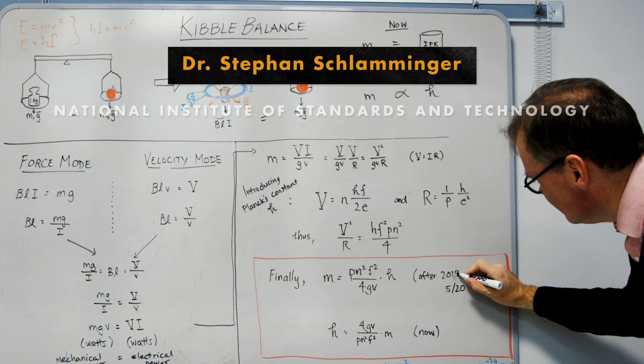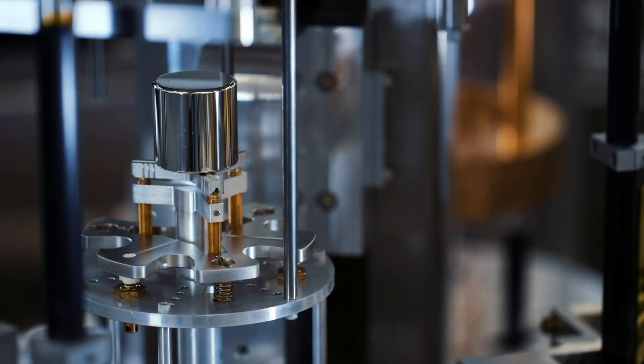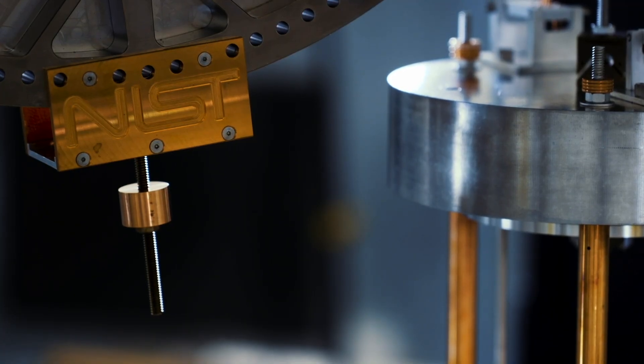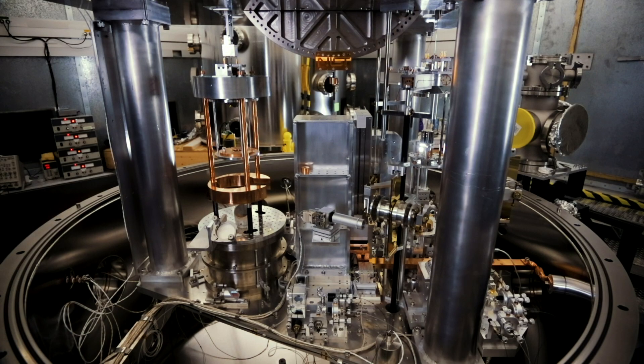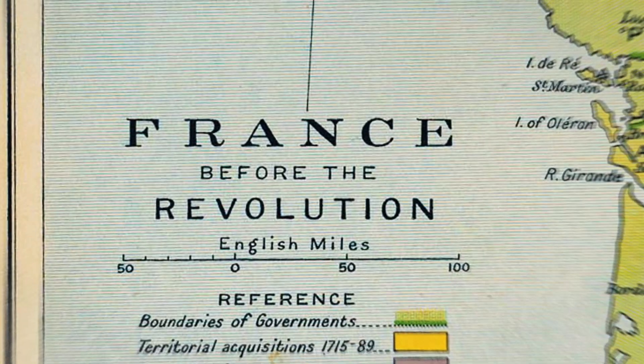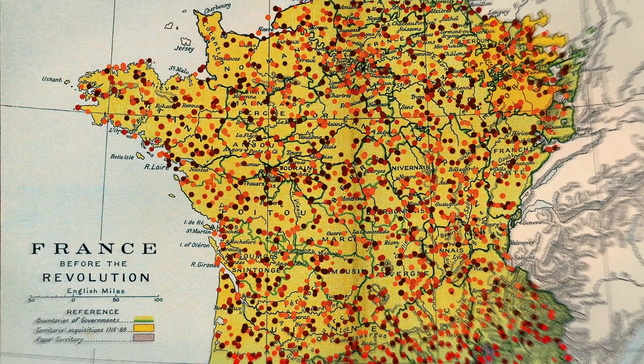Stefan Schlaminger is a physicist at the National Institute of Standards and Technology. He's wearing a hairnet because a kibble balance — an awesomely precise electromagnetic measuring instrument, precise enough that a strand of hair could upset its measurements — is right behind him. What Schlaminger is describing is the creation of the metric system. Because in France alone, just prior to the revolution, it's estimated there were 250,000 different units of measurement in use.